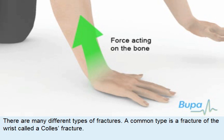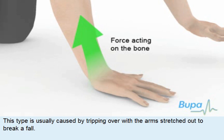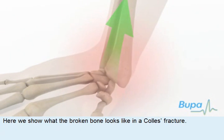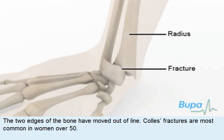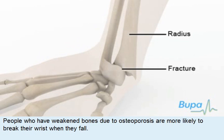There are many different types of fractures. A common type is a fracture of the wrist called a Colles' fracture. This type is usually caused by tripping over with the arms stretched out to break a fall. Here we show what the broken bone looks like in a Colles' fracture — the two edges of the bone have moved out of line. Colles' fractures are most common in women over 50. People who have weakened bones due to osteoporosis are more likely to break their wrist when they fall.